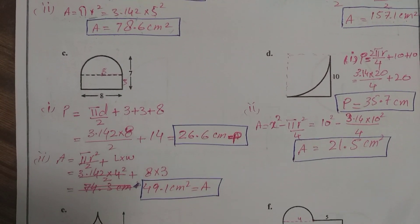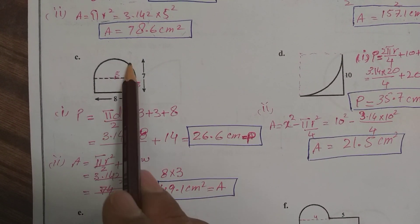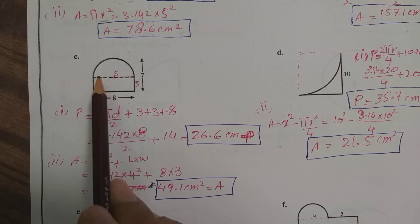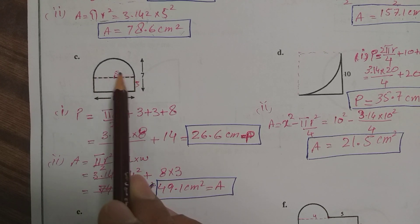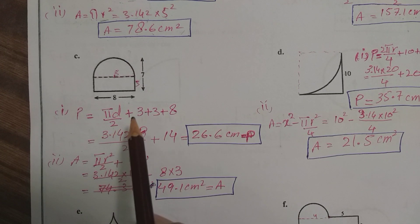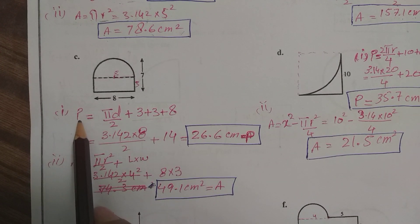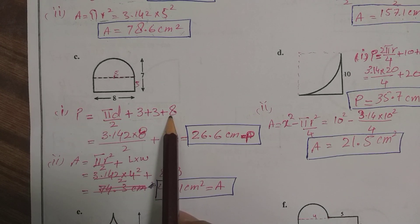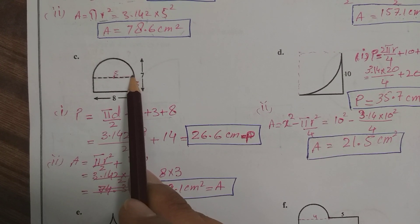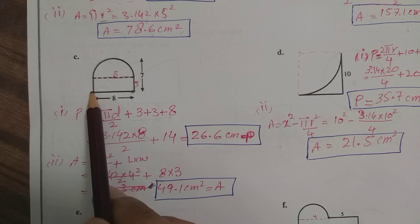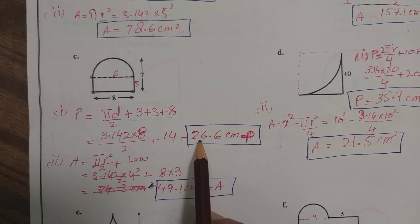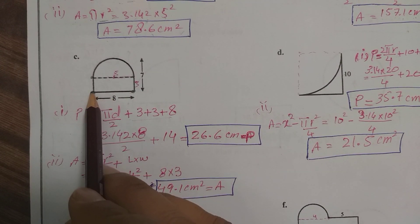In part c we need to find the perimeter of the shape. The curved part is the upper half of the circle, so we take half the circumference — the semicircle divided by 2 — plus the straight edges, because the perimeter equals the curved part plus the straight edges. The straight edges are measured from point to point. Adding all parts gives the perimeter of 26.6 centimeters.